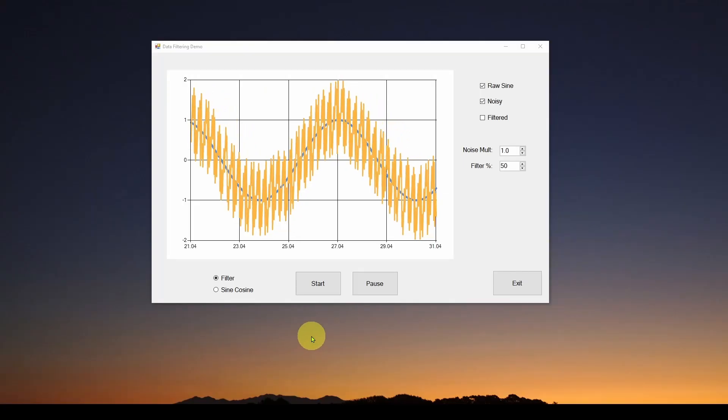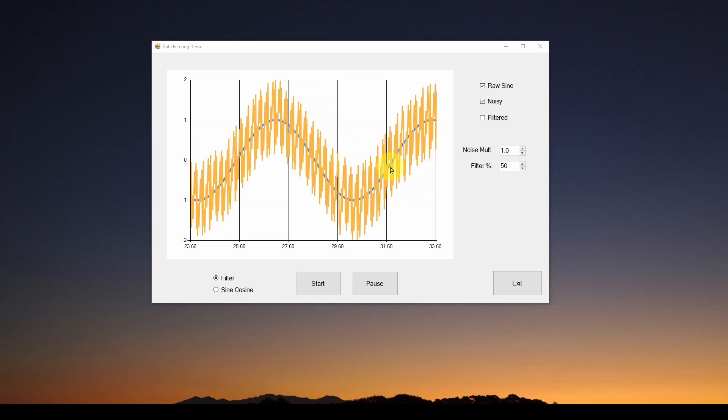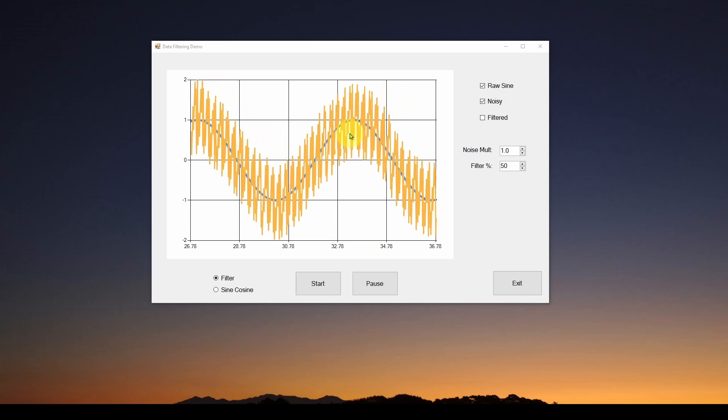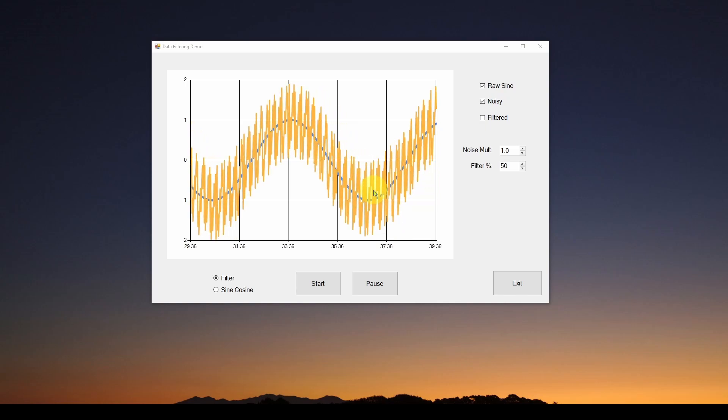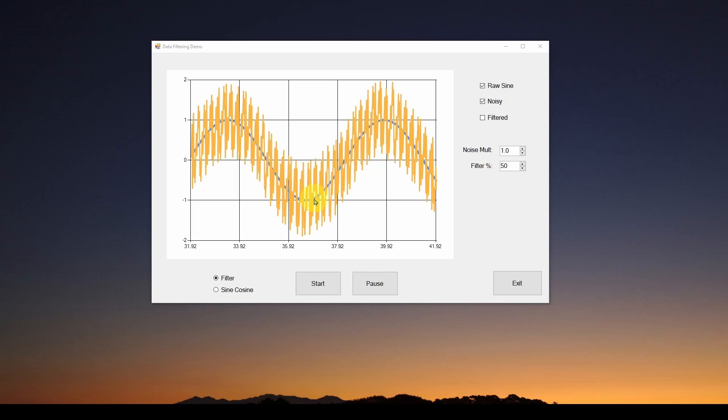So now let's say that this orange graph is the actual data coming in. And we're convinced that it should look like this blue clean sine wave. And all of this orange stuff is just noise. And we want to filter it as we showed with that equation in our software.